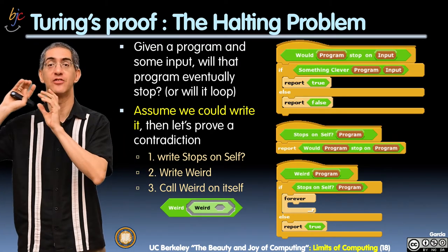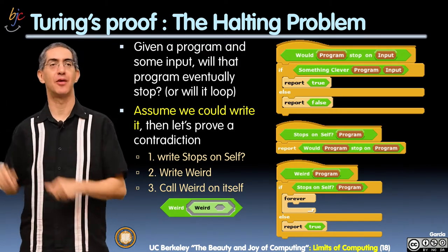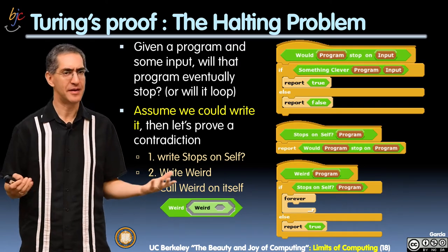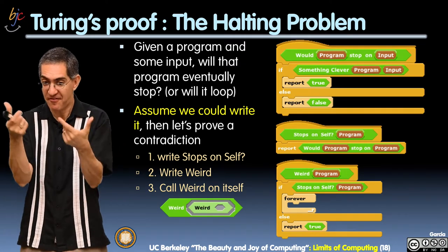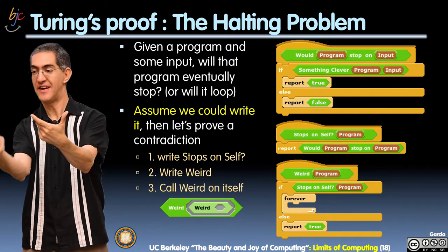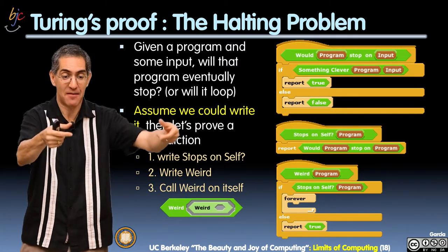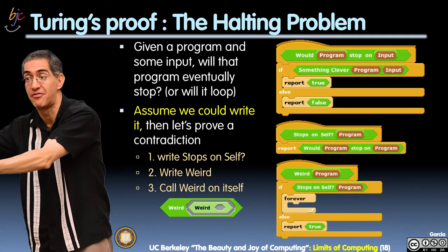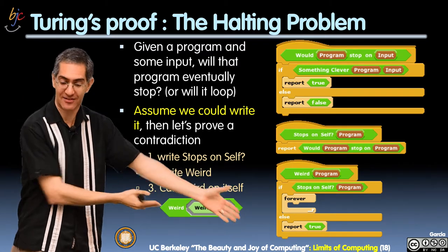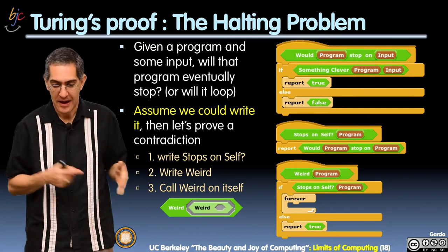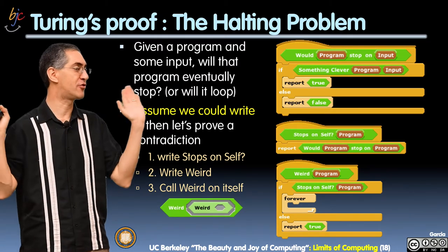So now, on the side, I'm going to write something called 'stops on self.' What does that mean? Well, stops on self says: would the program stop on the program? So if you somehow fed the data of the program and fed it into itself — you can take the program and encode it into a list, and you take that encoding of the program as a list and feed it into itself. Would the program stop on itself? So stops on self is going to call 'would program stop on self.' If it would stop on itself, I say true; if it wouldn't, I say false.